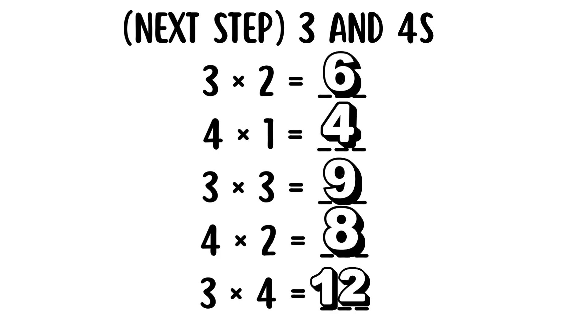Next step we have the threes and fours. Let's start. Three times two equals six. Four times one equals four. Three times three equals nine. Four times two equals eight. Three times four equals my favorite number twelve.